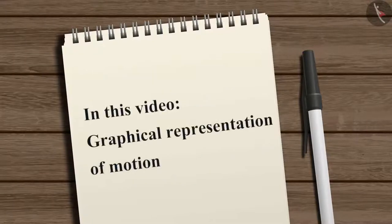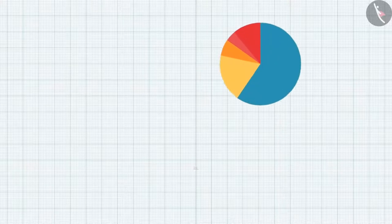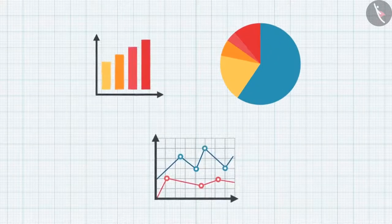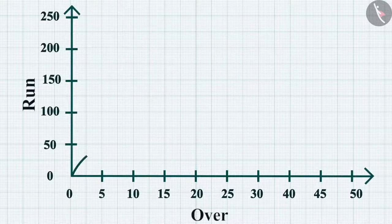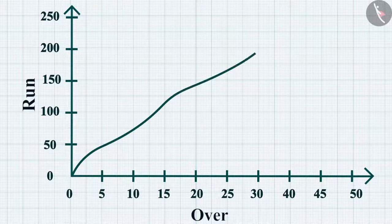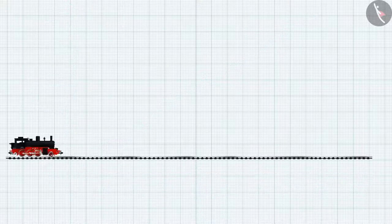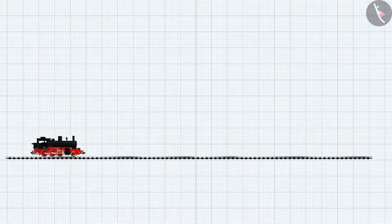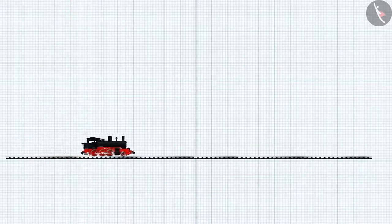In this video we will learn to represent the motion of an object on a graph. Graphs offer an easy method to showcase the relation between two physical quantities — for example, during a cricket match we can represent performance in a runs-versus-overs graph. Similarly, we can represent the motion of an object in a line graph.